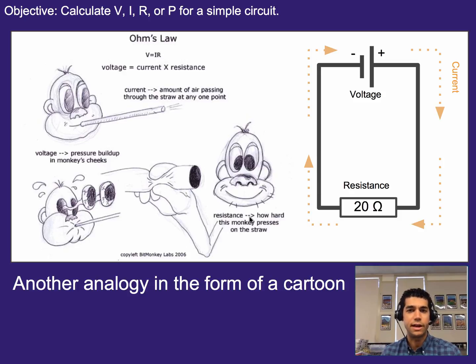So again, another analogy in the form of a cartoon. So voltage oftentimes thought of as kind of the pressure pushing the electrons through. Current is being the actual flow of electrons through. And resistance being kind of like how hard it is to push those electrons through in that sense.